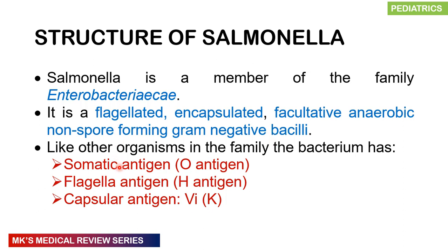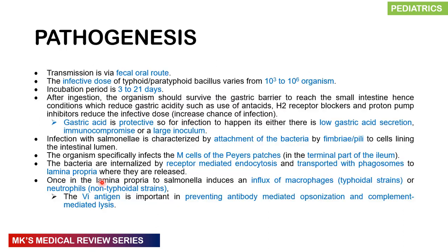The antigens include a somatic antigen — the O antigen — a flagellar antigen — the H antigen — and a capsular antigen. The pathophysiology: transmission is fecal-oral. For you to have had typhoid fever, you may have ingested fecal matter at one time in your life. The infective dose of typhoid or paratyphoid bacillus varies — it's about 10³ to 10⁶ organisms.